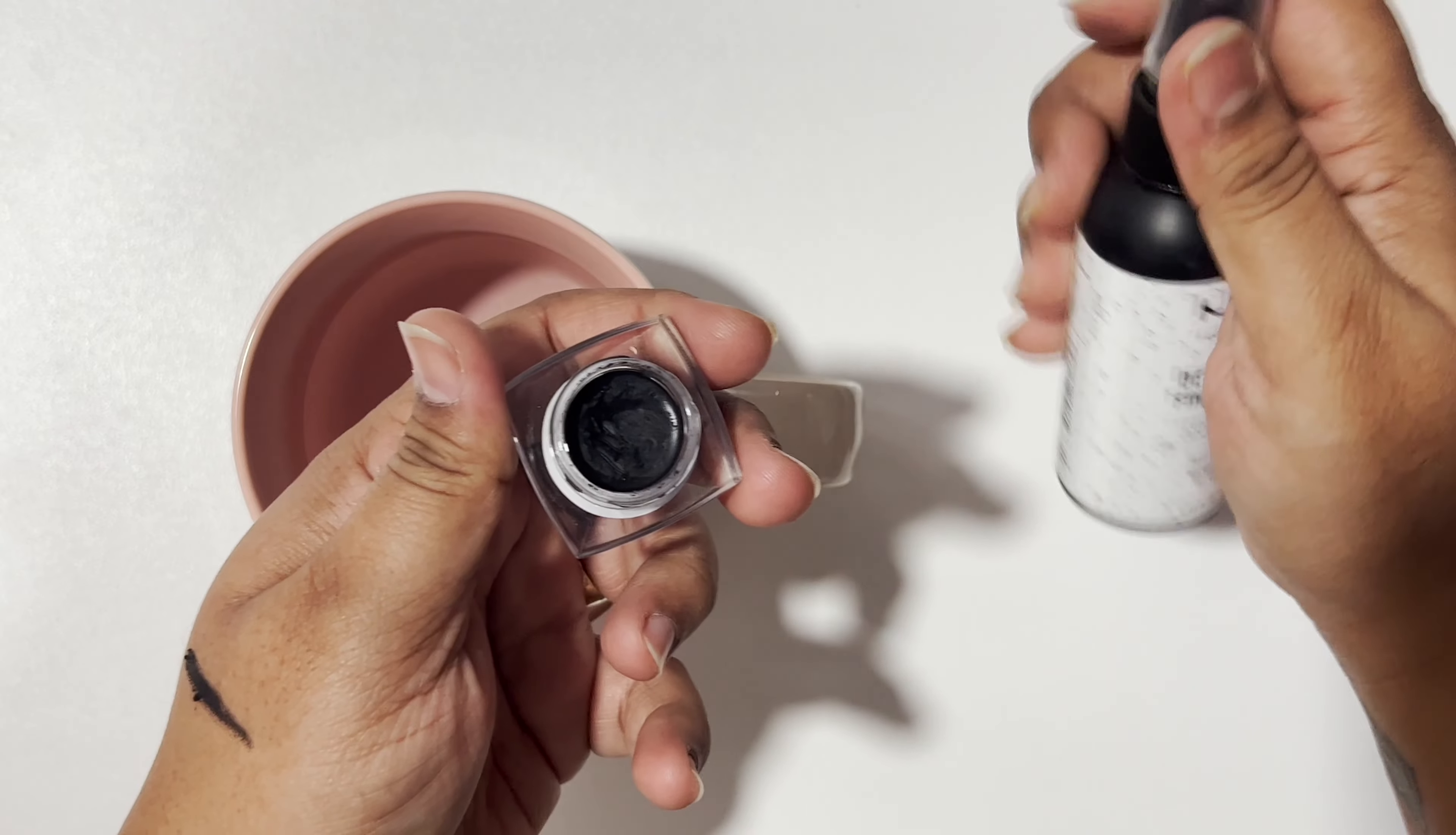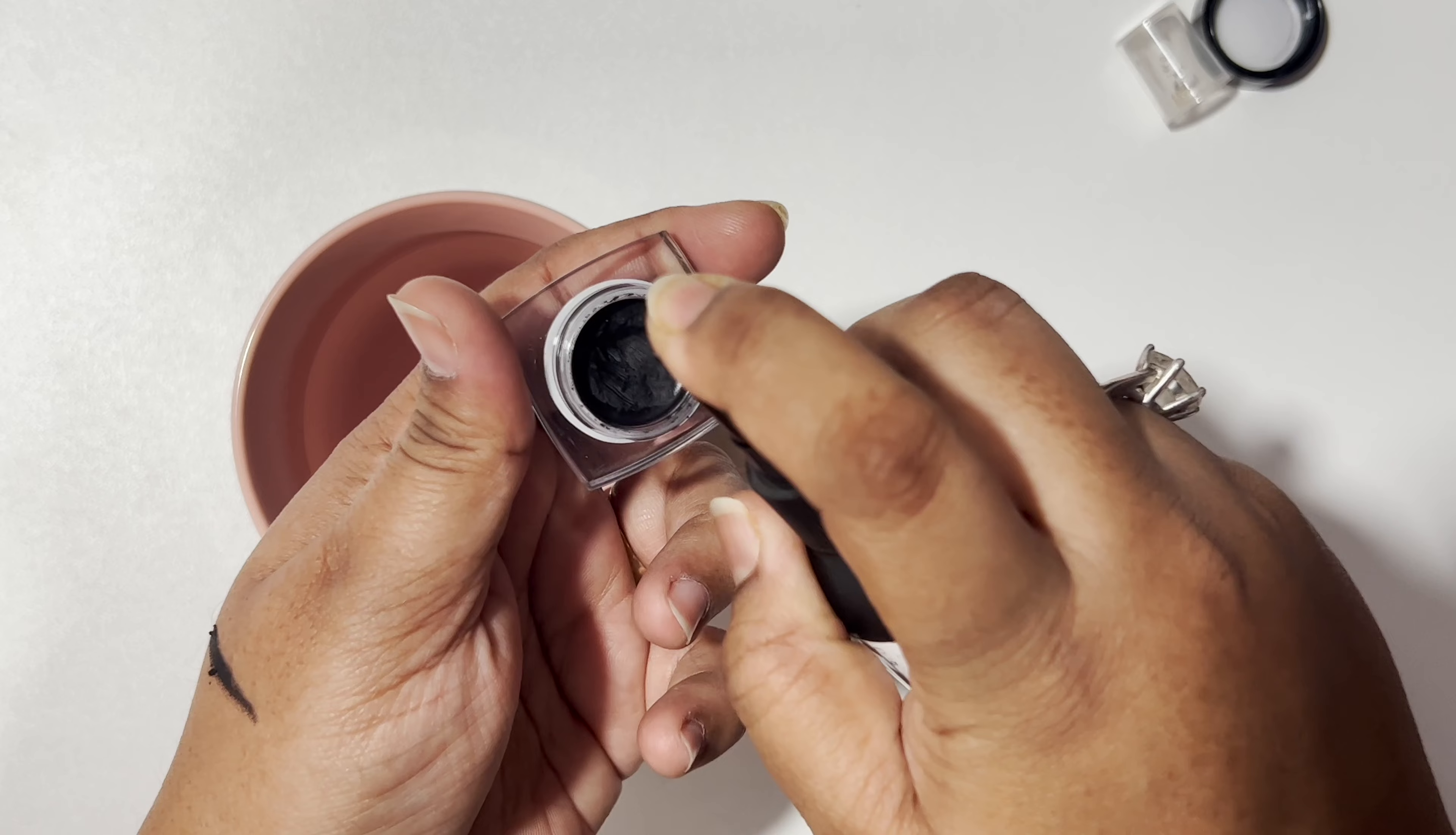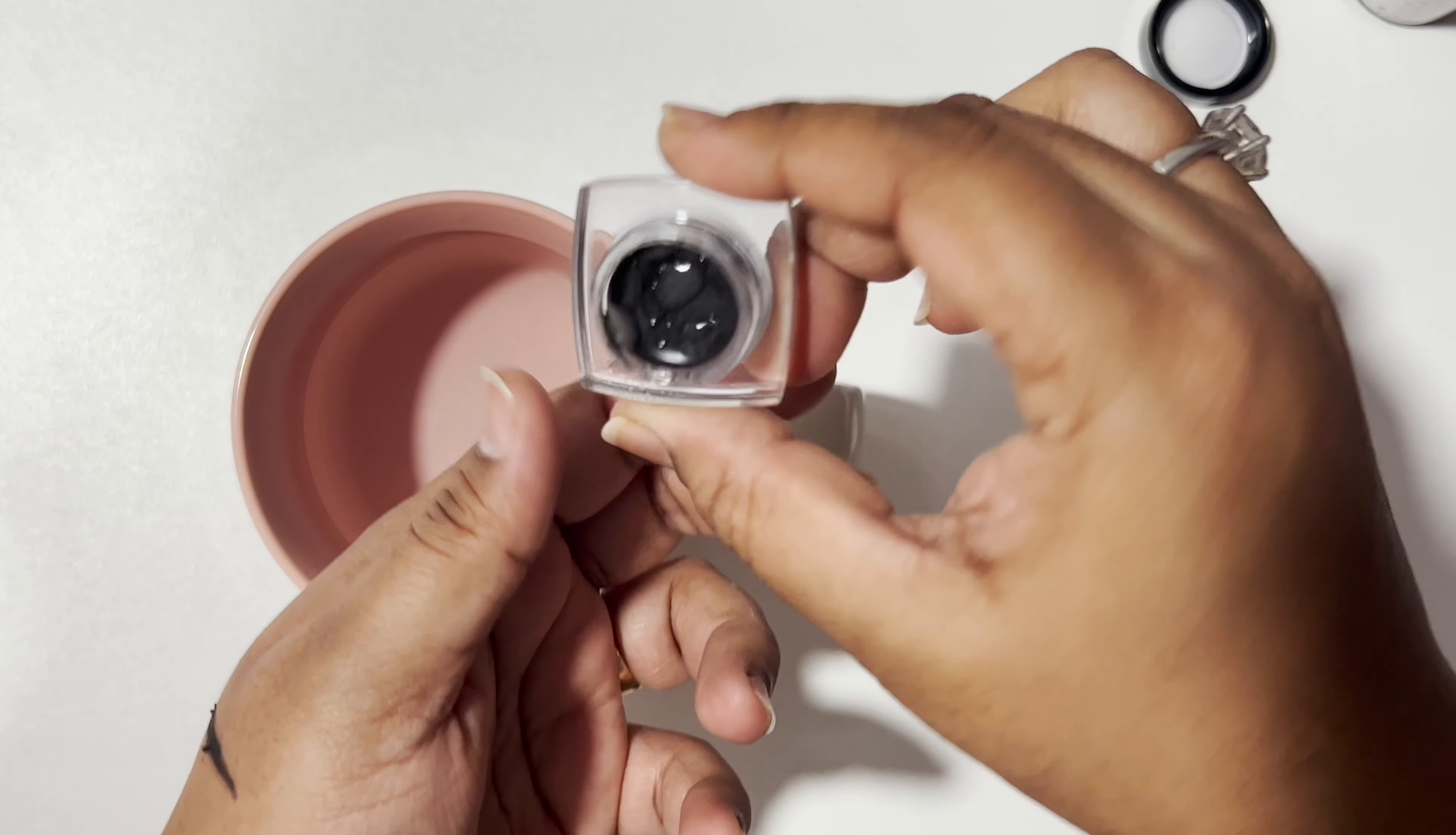Now I'm adding just two drops of setting spray. I'm going to shake this eyeliner really well so that it goes into all the product.